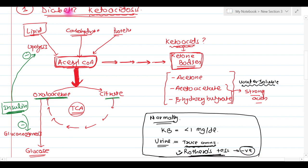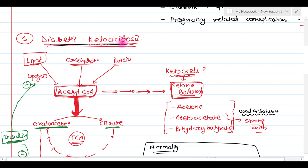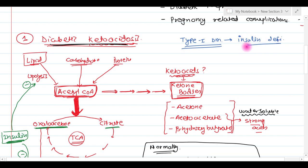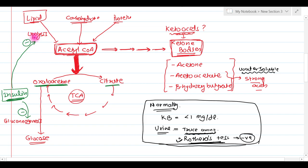In type 1 diabetes mellitus, there is insulin deficiency. If insulin is deficient, the inhibition of lipolysis is removed. So more and more lipid undergoes lipolysis and gives rise to acetyl-CoA. We can say that the amount of acetyl-CoA in the body increases because insulin is absent and lipolysis is not inhibited — more lipid is broken down to acetyl-CoA. This is the first hit.